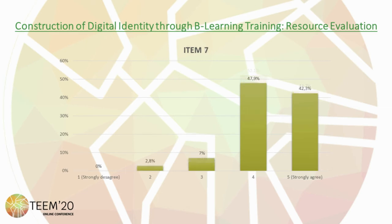Moving on to the seventh item, 47.3% agree that the technological resources helped them with their autonomous learning. 42.3% strongly agree and 2.8% disagree.